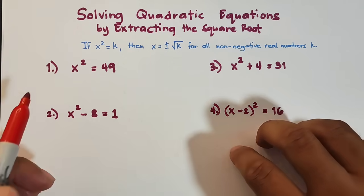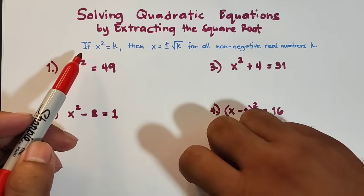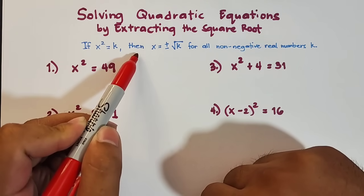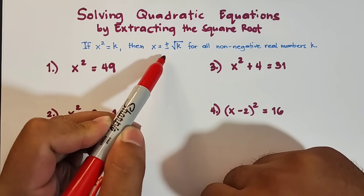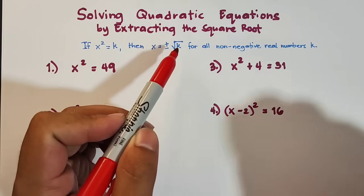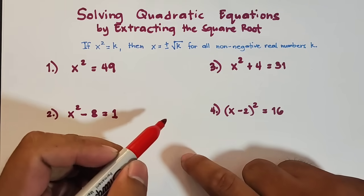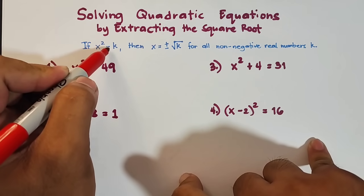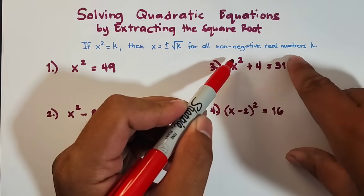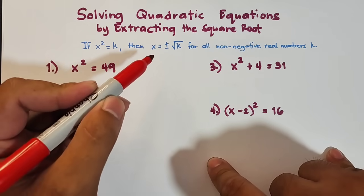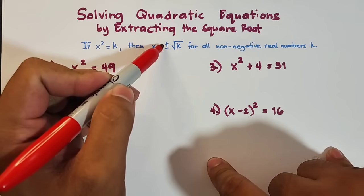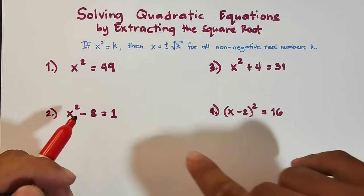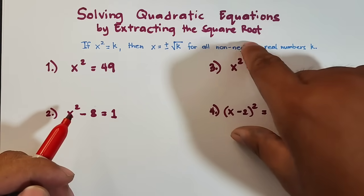Before we start, let's discuss the square root property in solving quadratic equations. It states that if x squared is equal to k, then x is equal to positive or negative square root of k, for all non-negative real numbers k. When we extract the square root of x squared, that is equal to x, and when we extract a non-negative real number k, it gives us two different values — one positive and one negative.